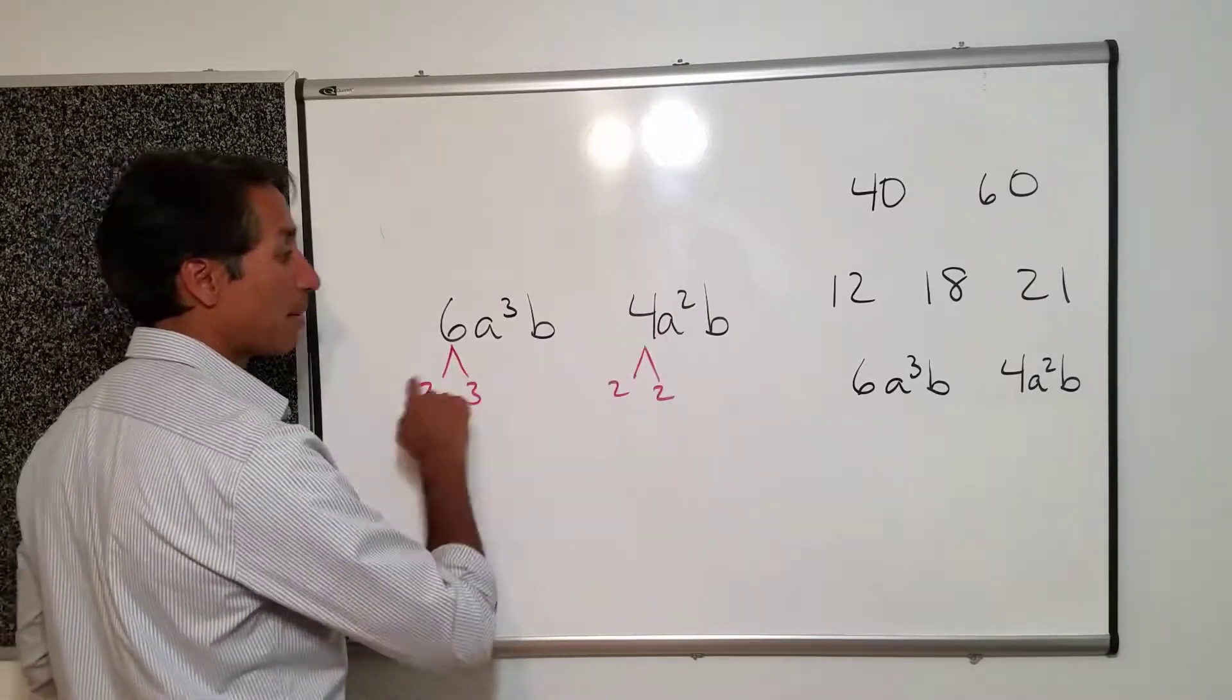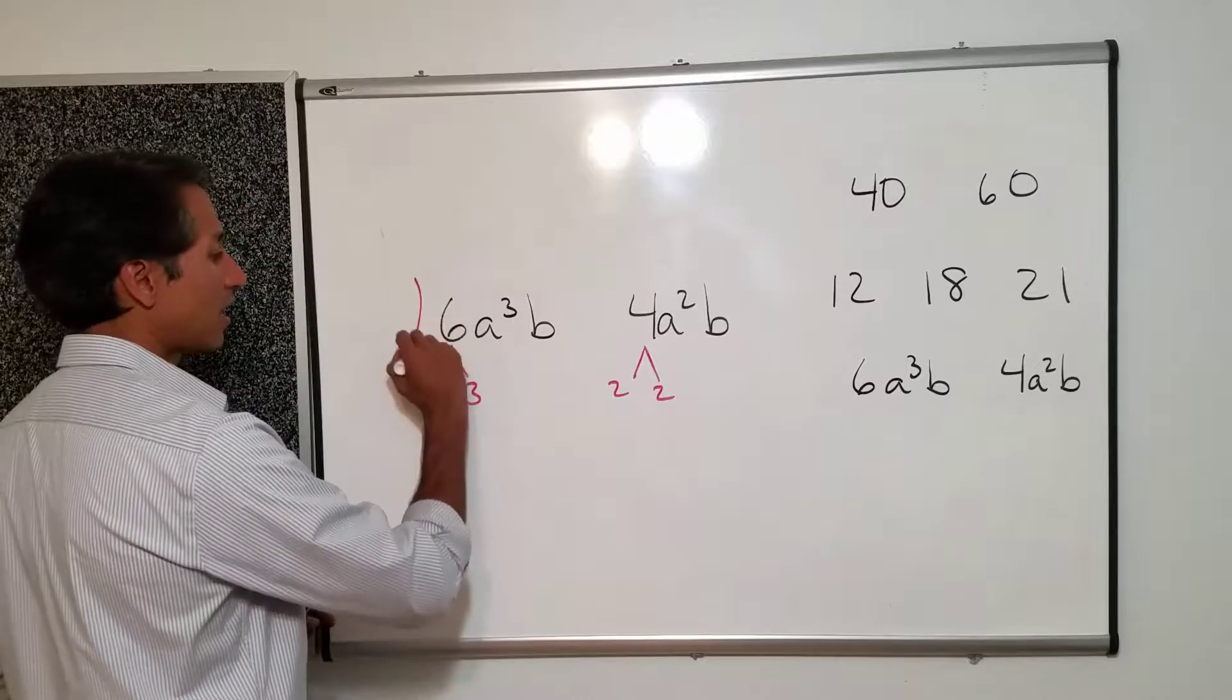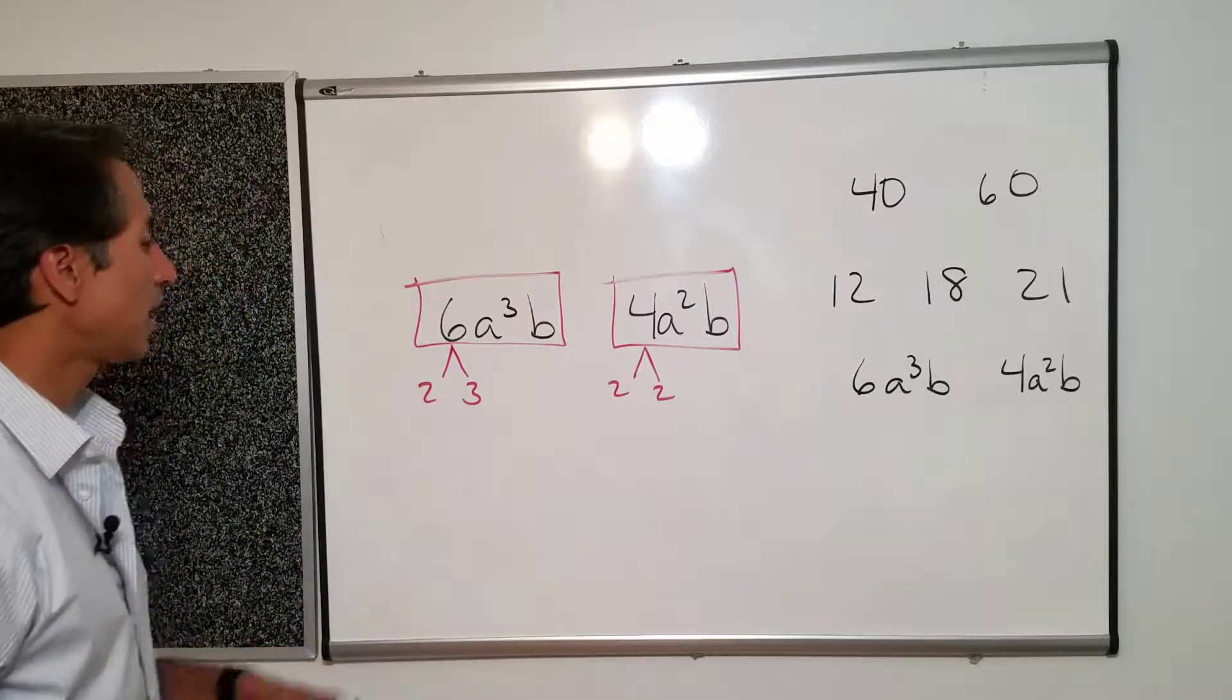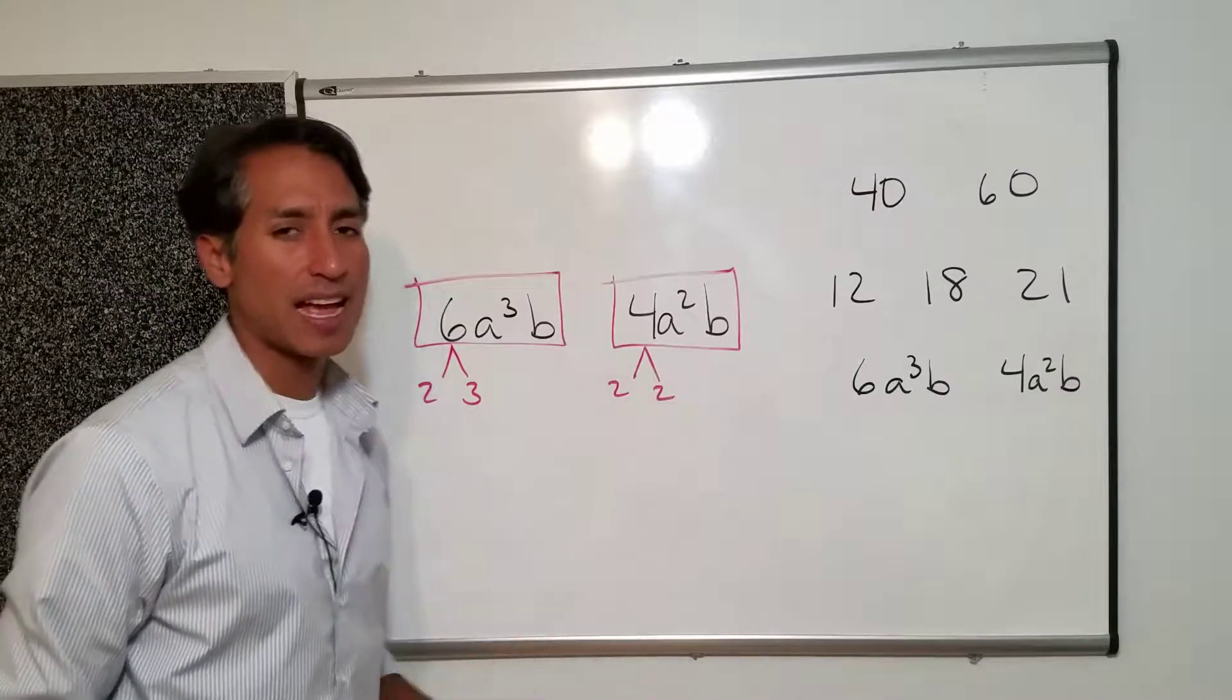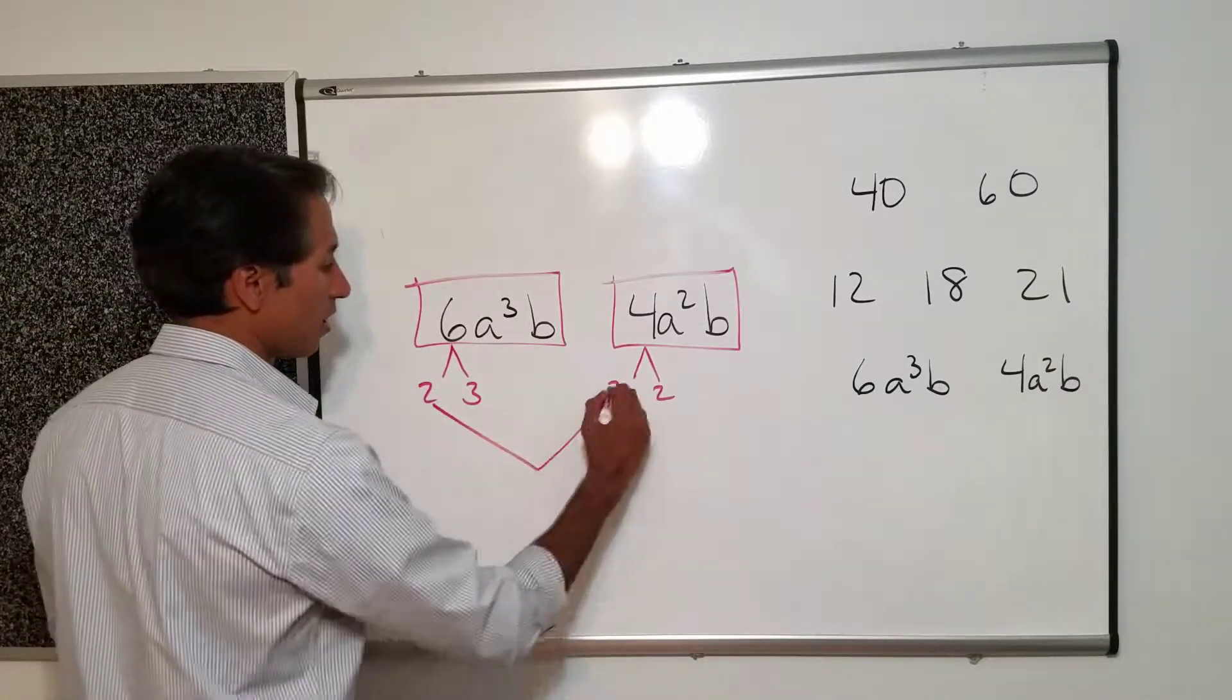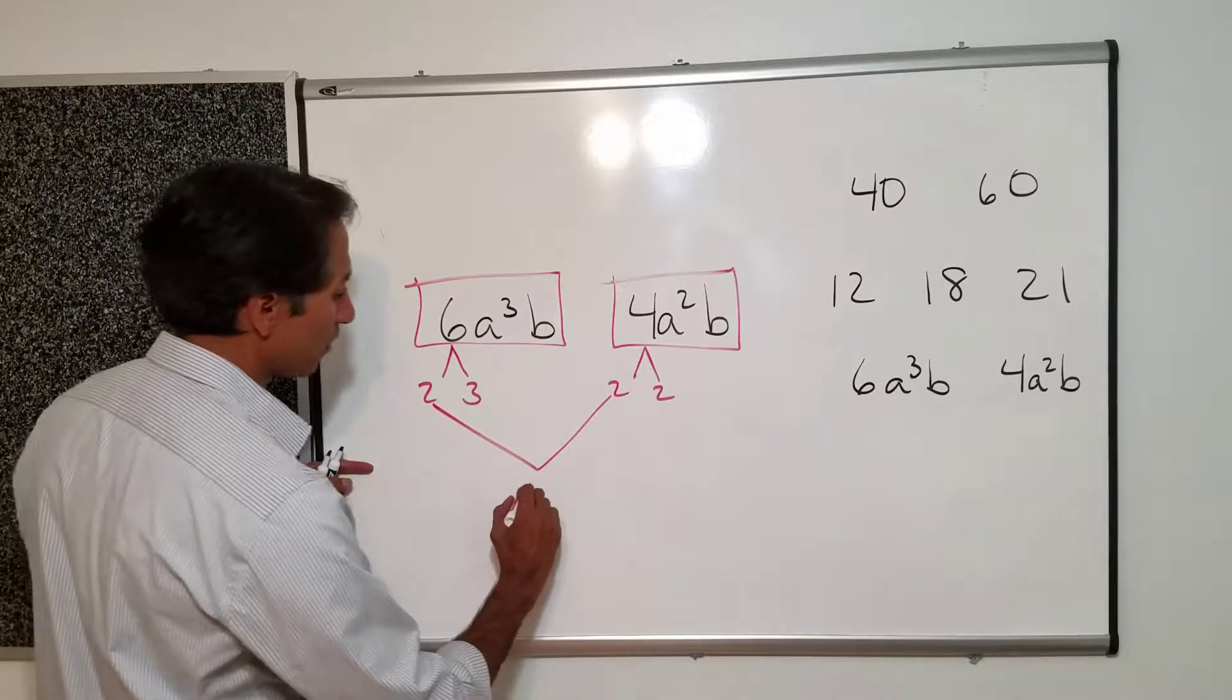Okay. So what can I pull from the numbers? And you got to look at this thing. It's all one big deal over here. So we have this guy versus this guy. Or this guy and this guy. The greatest common number that I can pull out of both of them is a 2. 2.